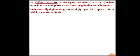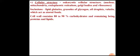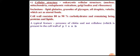Fungi also contain inclusions such as lipid globules, granules of glycogen, oil droplets, and volutin granules, which act as stored food sources. The cell wall of fungi contains 80 to 90 percent carbohydrates and the remaining are proteins and lipids. A typical feature of the fungal cell wall is the presence of a polymer called chitin. This is a major difference between plant and fungal cell walls: plant cell walls contain cellulose, whereas fungal cell walls are rich in chitin.